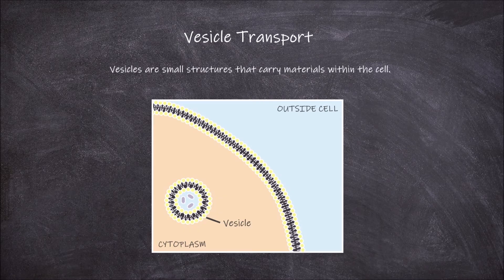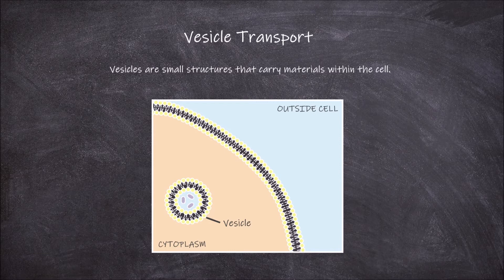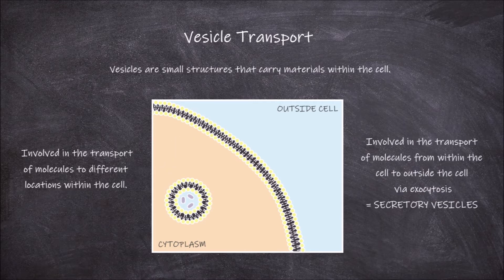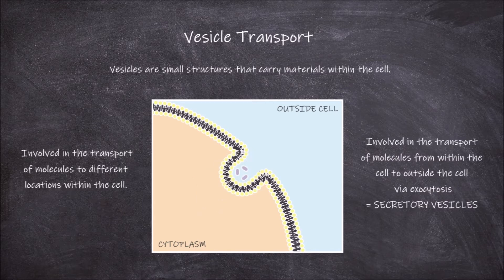Vesicles are small structures that carry materials within the cell. They can be involved in the transport of molecules to different locations within the cell. They can also be involved in the transport of molecules from within the cell to outside of the cell via exocytosis.